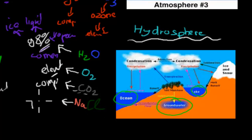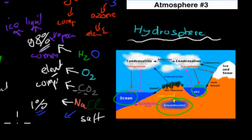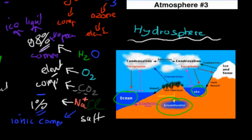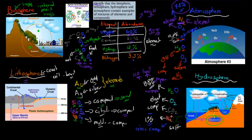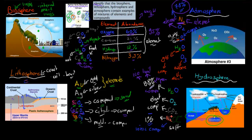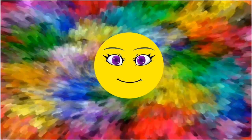About 1% of the ocean is made up of sodium chloride, NaCl — salt. This is an example of a compound, and specifically an ionic compound, because the atoms are not held together by covalent bonds but by positive and negative attractions. So the idea was to identify that the biosphere, lithosphere, hydrosphere, and atmosphere all contain examples of mixtures of elements and compounds. We explained what each sphere was and went through key examples of elements and compounds found in each area. I hope that was useful. Thank you for watching.